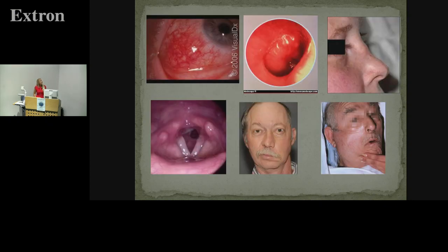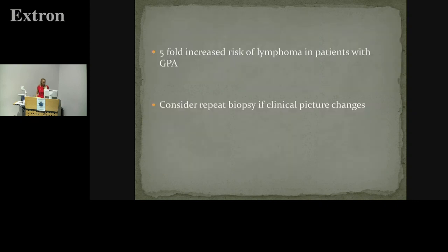Different manifestations include middle ear effusion, saddle nose deformity, facial palsies, subglottic stenosis, and blepharitis. We want to be looking at the whole of the head and neck area and beyond for evidence of GPA.